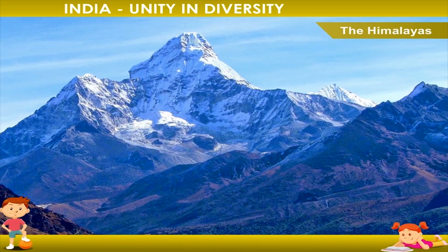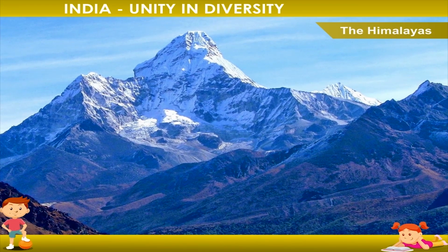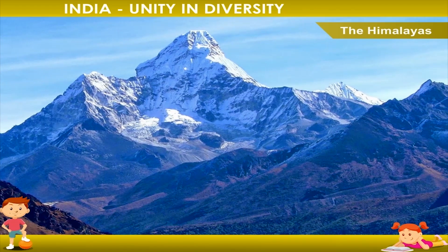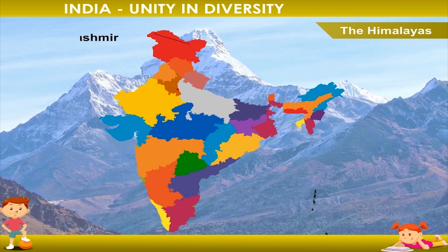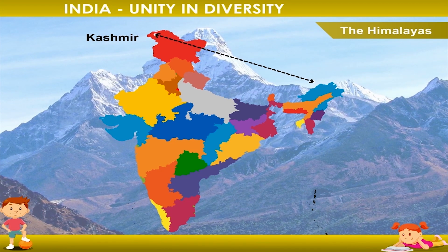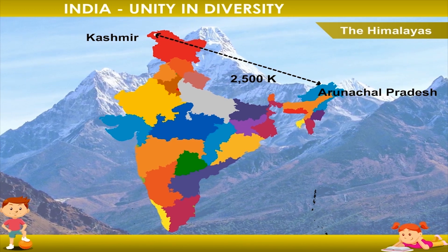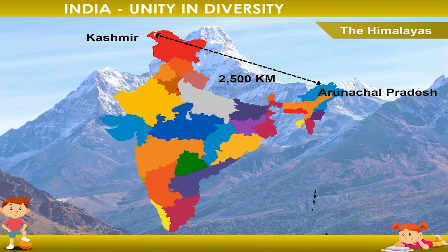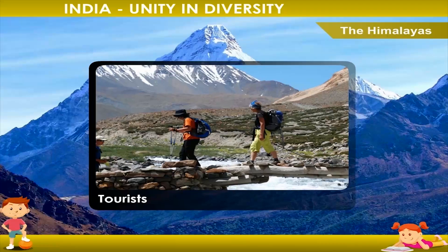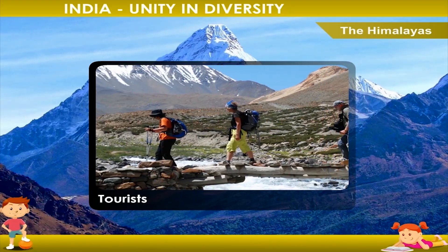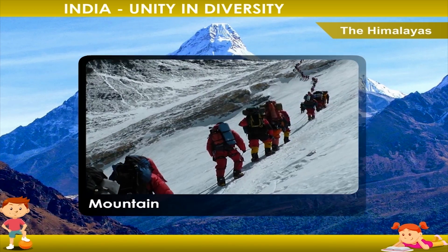The Himalayas are the highest mountain range in the world — they are a wall of India. The Himalayas in India extend from Kashmir in the west to Arunachal Pradesh in the east, for a distance of about 2500 km. The beauty of the Himalayas has always attracted tourists, men and women from all over the world. Many mountaineers try to climb the mountain peaks.